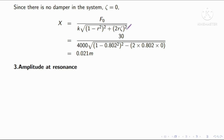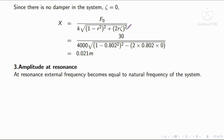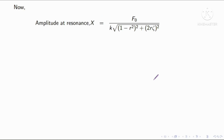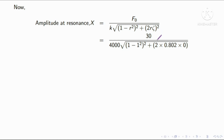Next, amplitude at resonance. At resonance, the external frequency becomes equal to the natural frequency of the system, so omega equals omega n, meaning r equals 1. Since there is no damper, zeta equals 0. The denominator becomes 0, so the amplitude at resonance is infinity.